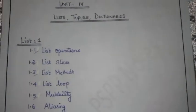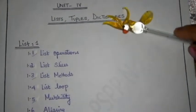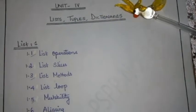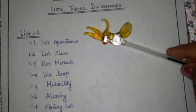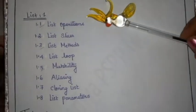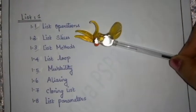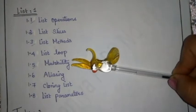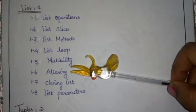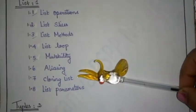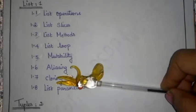Hi guys, welcome back. In this series you will see Unit 4, which covers lists, tuples, and dictionaries. In the first topic, lists, we are going to see eight different subtopics: list operations, list slice, list methods, list loop, list mutability, aliasing, cloning list, and list parameters.